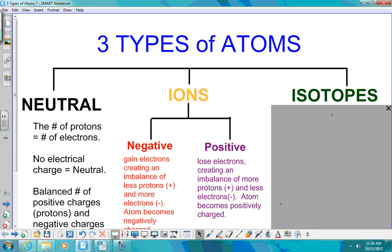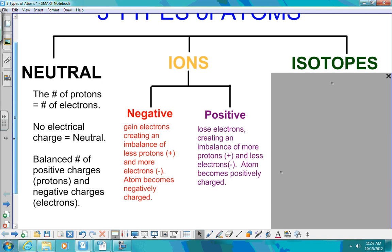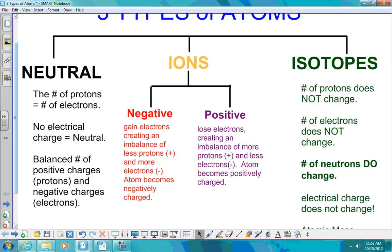The last thing I want to talk to you about are isotopes. And isotopes is when we go from a neutral atom to an isotope by taking or adding neutrons. So important to remember, the number of protons does not change. The number of electrons does not change. The electrical charge does not change. It still stays neutral.